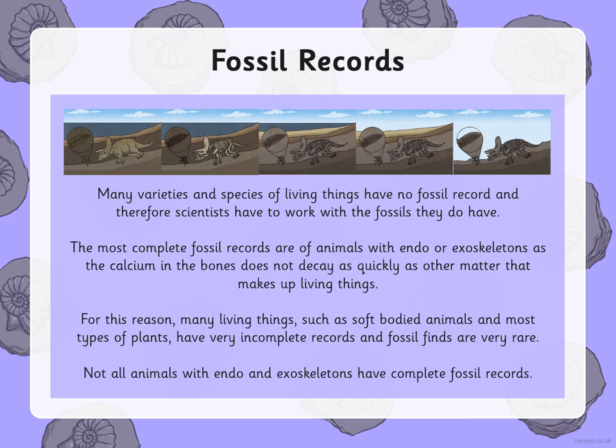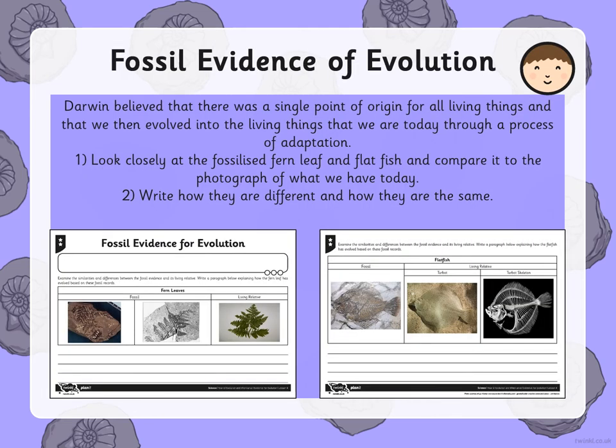Not all animals with endoskeletons have complete fossil records. Darwin believed that there was a single point of origin for all living things and that we evolved through a process of adaptation. Look closely at the fossilised fern leaf and flat fish and compare them to photographs of what we have today. Write how they are different and how they are the same.